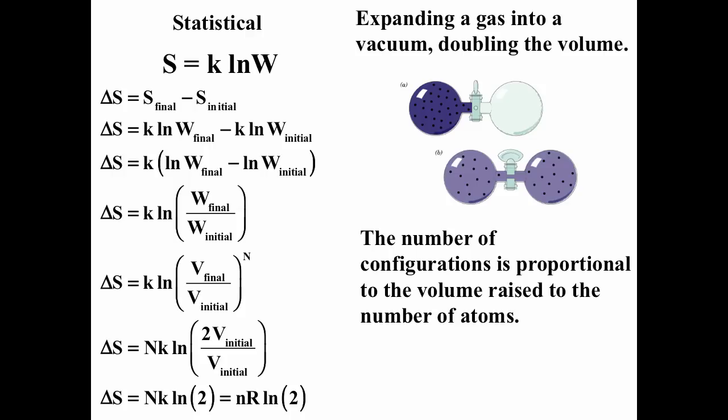The V_initial terms cancel, leaving ln(2). Since R = N_A · k (Avogadro's number times the Boltzmann constant), and N = N_A · n, we end up with ΔS = nR·ln(2). So we are able to calculate that using the statistical equation.